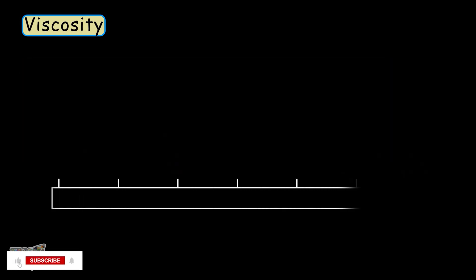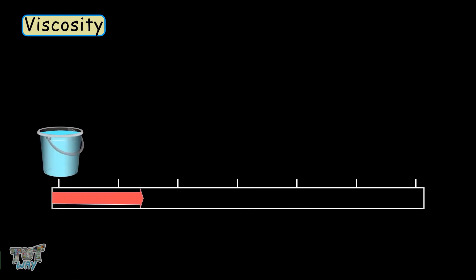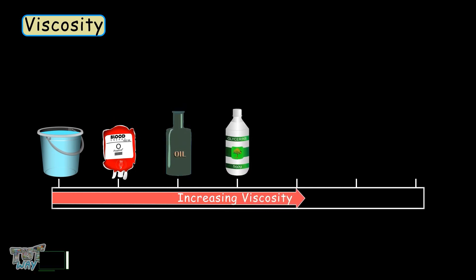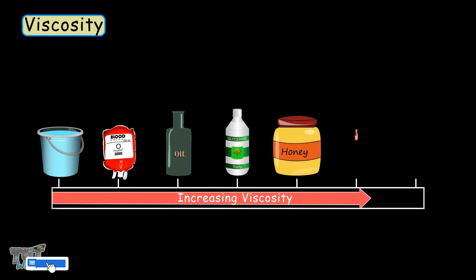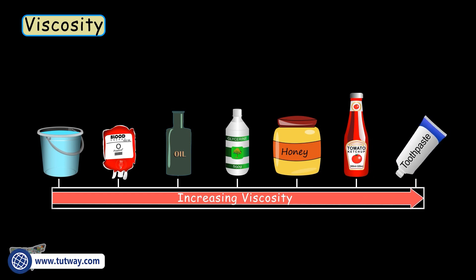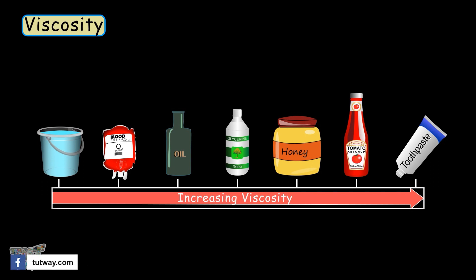Let's learn about some liquids in the order of increasing viscosity. Water has the least viscosity, then blood, olive oil, glycerin, honey, ketchup, and toothpaste. Toothpaste has the highest viscosity amongst these liquids. So now you know what viscosity is — it is related to the thickness of the fluid. Remember, the higher the thickness, the higher the viscosity.